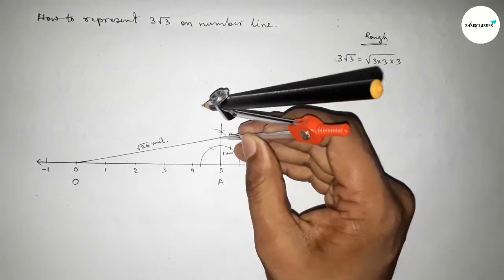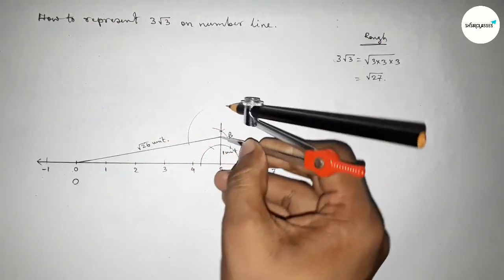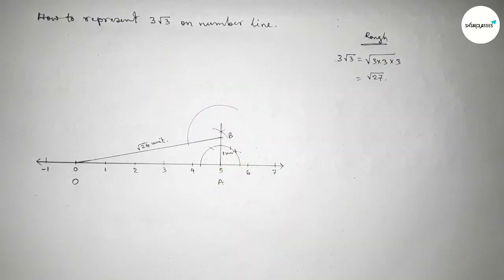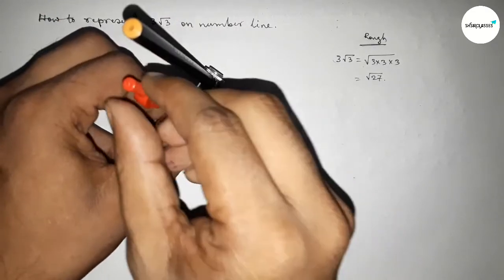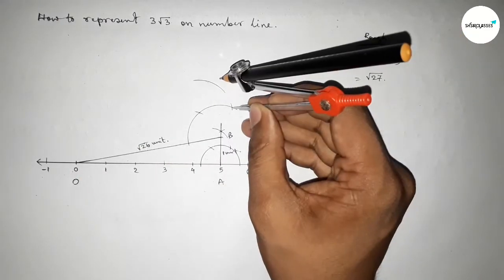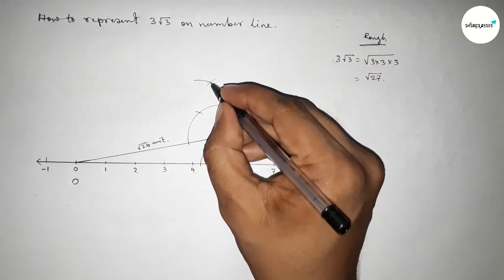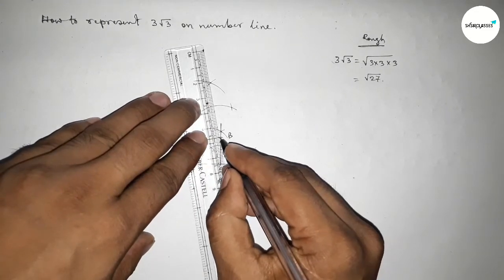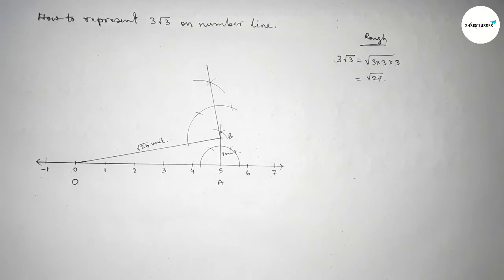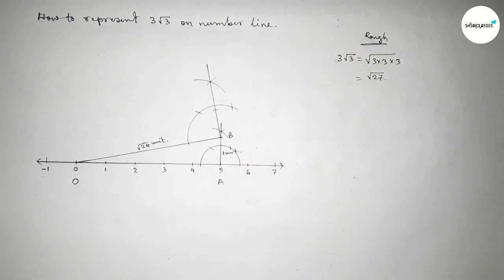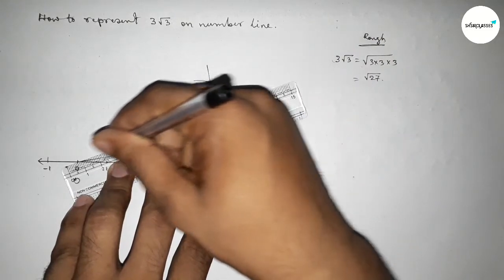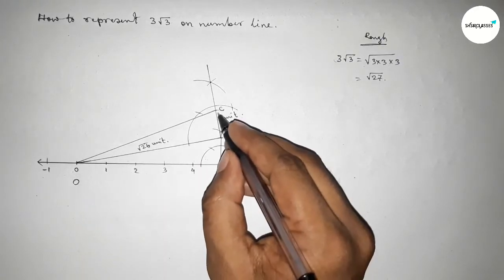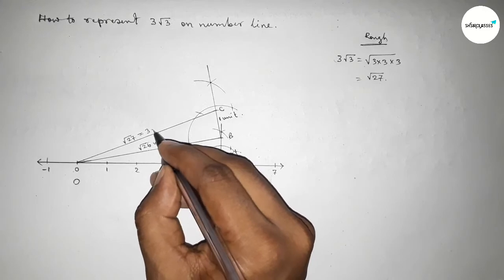Next, we find √27 by drawing a 90-degree angle at point B. Putting the compass at B, taking any length and drawing an arc, then with the same length cutting at multiple points so both curves intersect. Joining gives the perpendicular at B. Taking one unit length and marking point C, then joining O and C — from right angle triangle OBC, OC is √27, which equals 3√3 units.